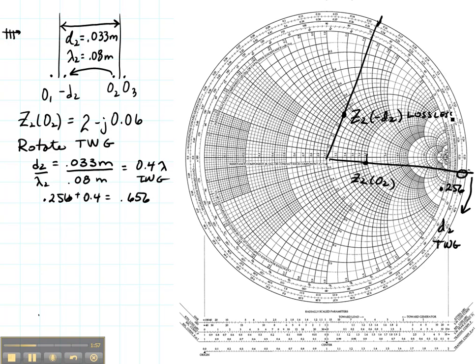Now the next thing that I need to do is read the magnitude of the reflection coefficient for the lossless case. And if I just bring that down here on the reflection coefficient axis, it's going to be about 0.33.